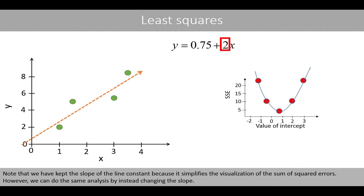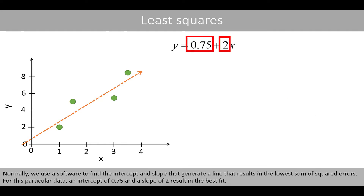Note that we have kept the slope of the line constant because it simplifies the visualization of the sum of squared errors. However, we can do the same analysis by instead changing the slope. Normally, we use software to find the intercept and slope that generate a line with the lowest sum of squared errors. For this particular data, an intercept of 0.75 and a slope of 2 results in the best fit.